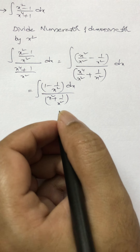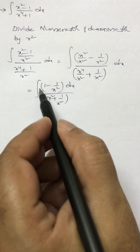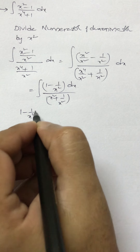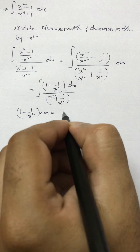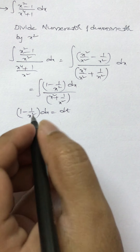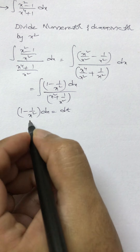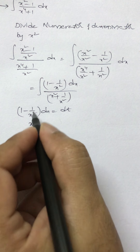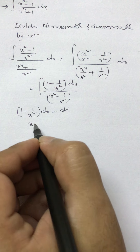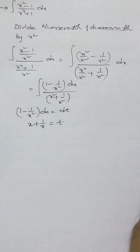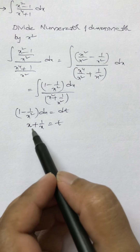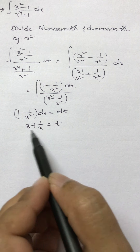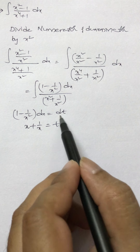From here we assume whatever is in the numerator as dt. So 1 - 1/x² dx is dt. Integrating backwards: the integral of 1/x² is -1/x, so minus of minus gives plus. Therefore t = x + 1/x. Differentiating: derivative of x is 1, derivative of 1/x is -1/x², so dt = (1 - 1/x²) dx. Confirmed.